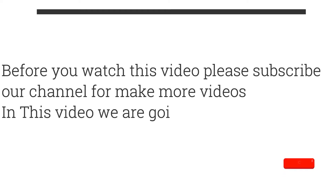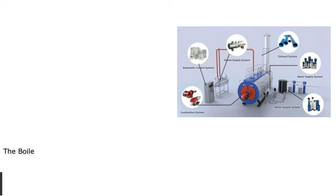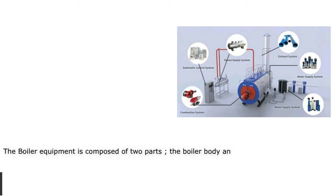In this video we are going to see the classification of boilers. The boiler equipment is composed of two parts: the boiler body and auxiliary equipment.